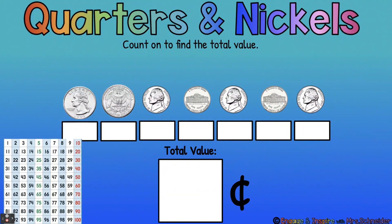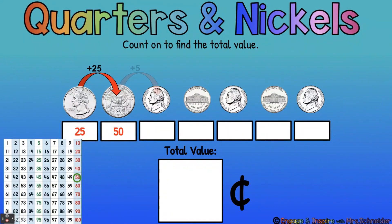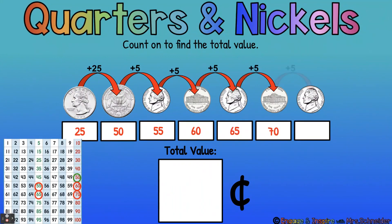Remember, count our quarters first. One quarter is 25, two quarters is 50. Put 50 on our hundreds chart and now count by fives — zigzag back and forth. 50 plus 5 is 55, then 60, 65, 70, 75. The total value is 75 cents. Good job.